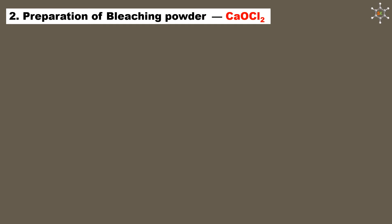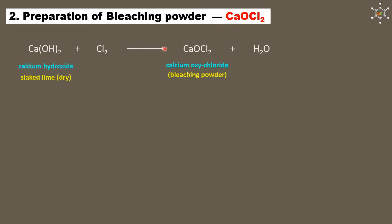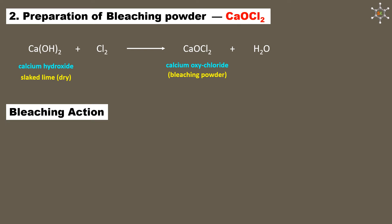Bleaching powder (CaOCl2, calcium oxychloride) is prepared by the action of chlorine gas on dry slaked lime (calcium hydroxide), also producing water as a byproduct. Although the chemical formula is written as CaOCl2, its real chemical composition is very complex. For its bleaching action, bleaching powder reacts with carbon dioxide from air to form calcium carbonate and releases chlorine gas.